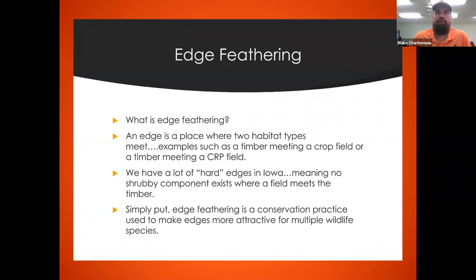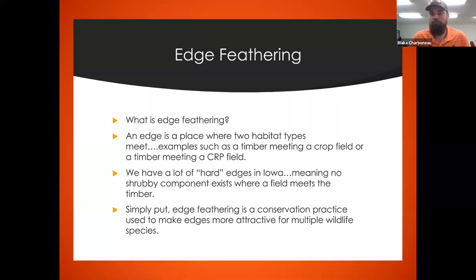Simply put, edge feathering is a conservation practice that makes edges more attractive to wildlife. When you feather that edge and create a transition period from a grass cover type to a forest habitat type, or from a crop field to a forest habitat type, you're offering more of a full habitat picture in more possible suited areas for different kinds of wildlife.